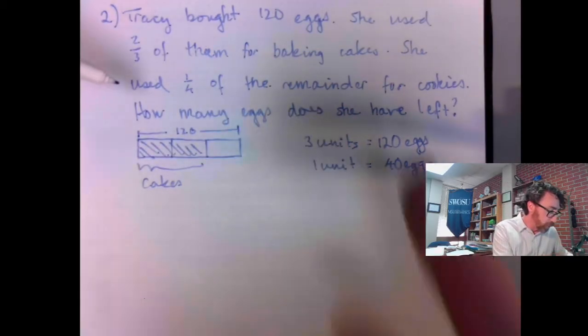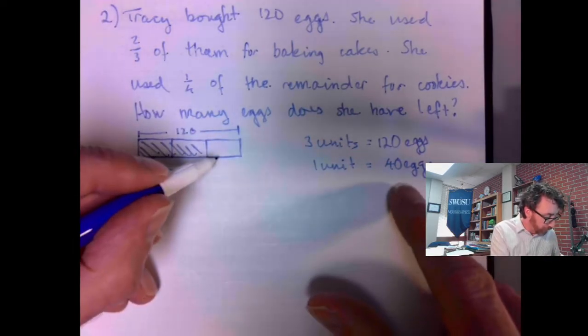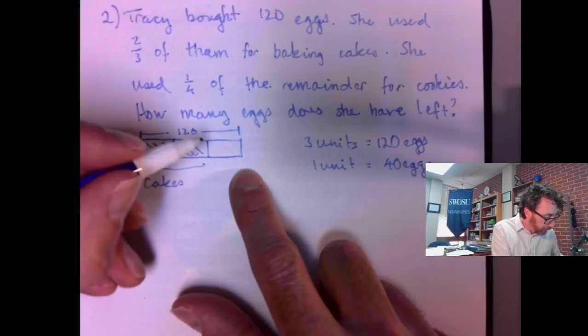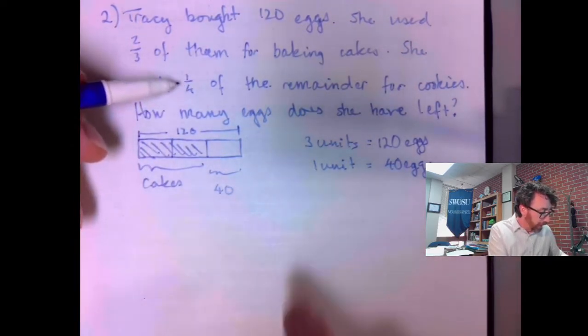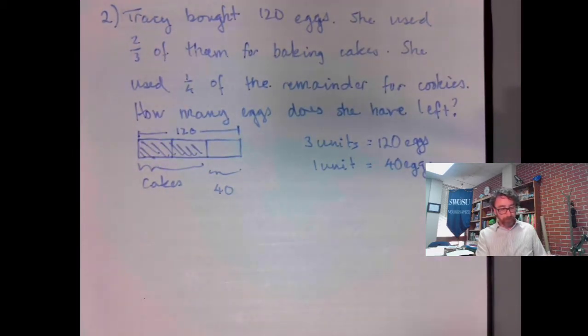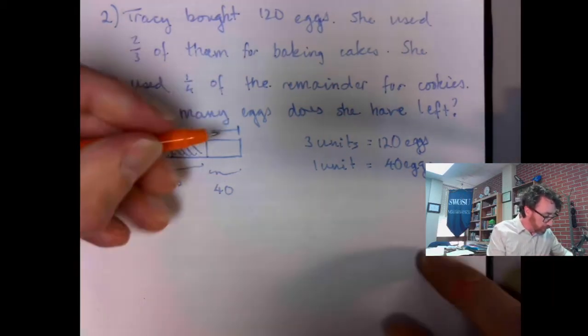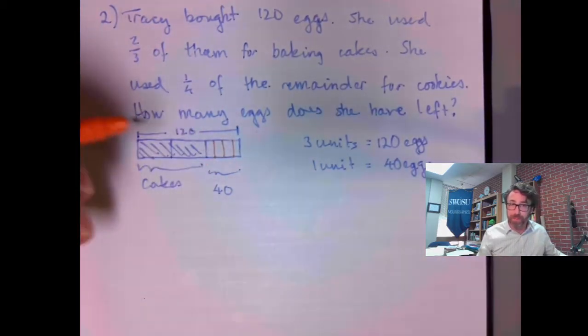She uses one-quarter of the remainder for baking cookies. I just figured out that this represents 40 eggs. Of that, she used one-quarter for baking cookies. I should subdivide this into one, two, three, four equal pieces.